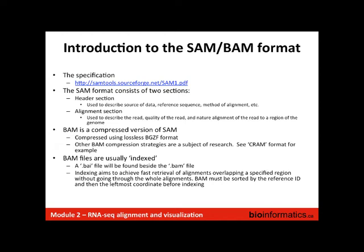BAM files are often indexed. Just like you took your reference genome and created an index for it, you can take your BAM file and create an index, which gives you a faster way of looking up alignments. If you want alignments from chromosome 10, rather than searching through the whole file, the index — a lookup file — tells you how to get to that part of the file quickly. You'll see a .bai file next to the BAM file, which is the BAM index file, and we're going to create some of those to view data in IGV.